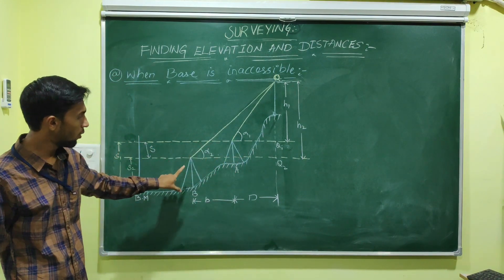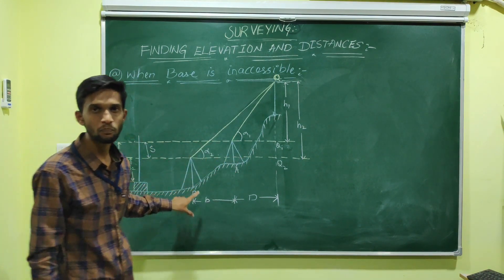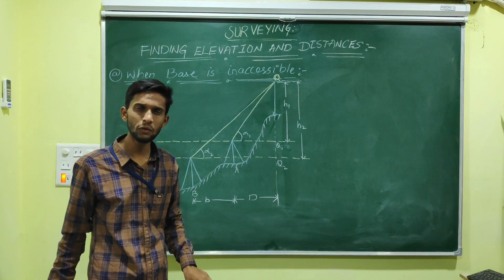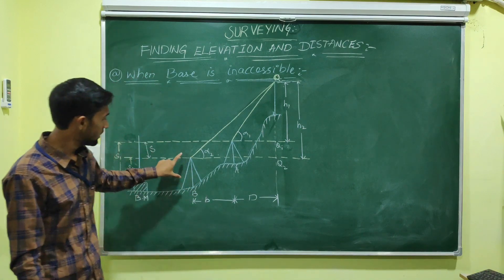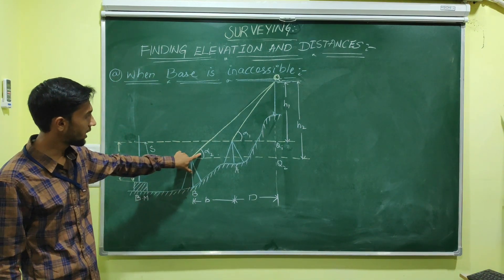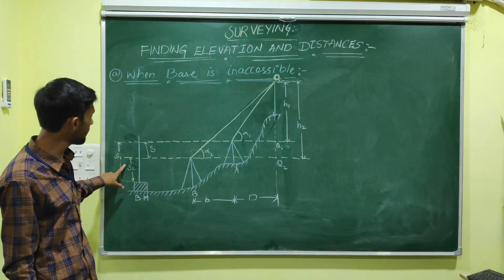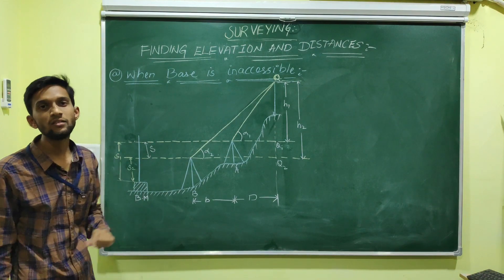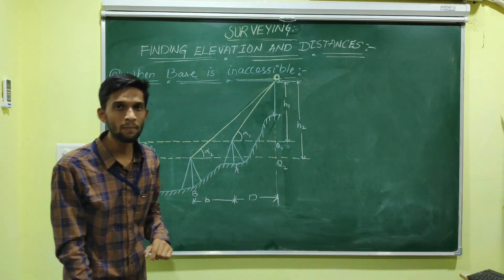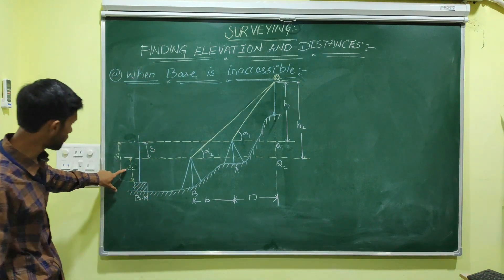Then move the theodolite, set it up at B, take the vertical angle and the staff reading on the benchmark — that is S2.